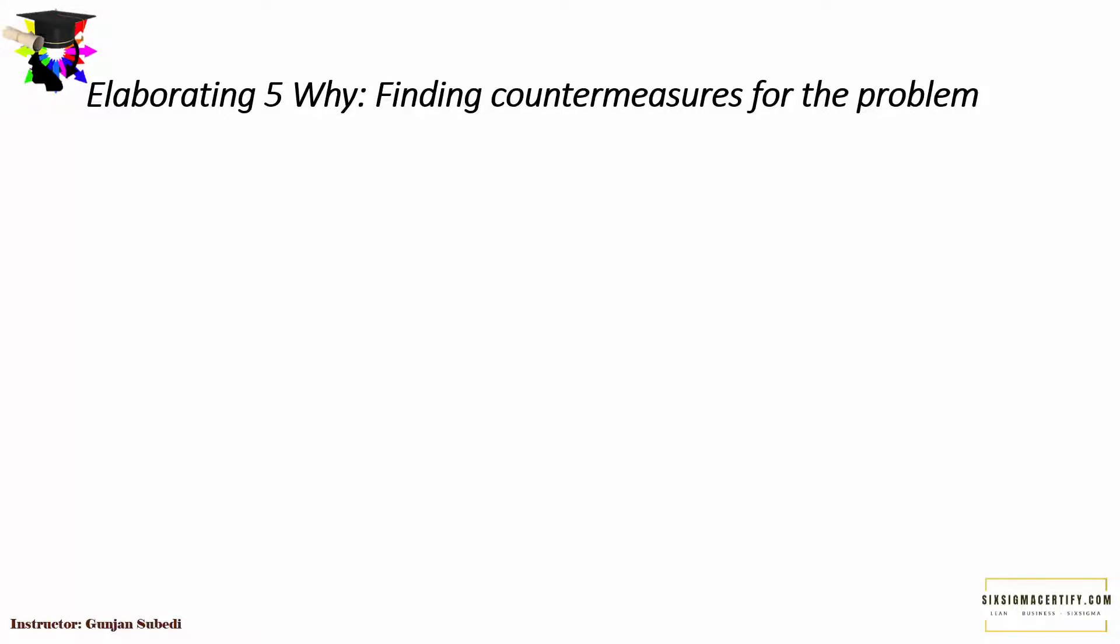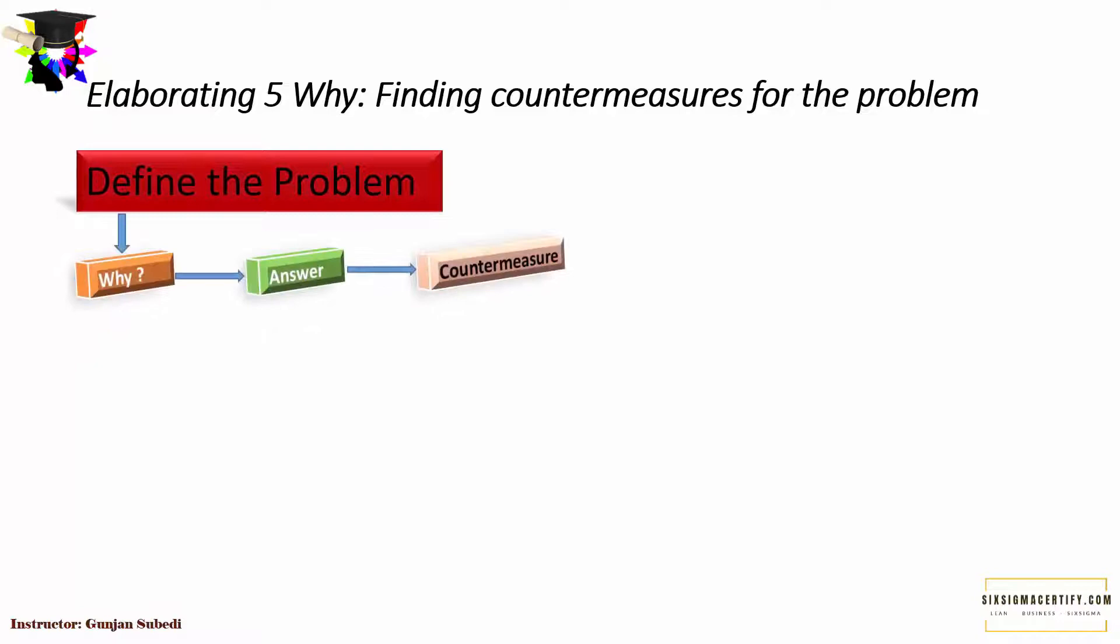The right approach of 5-Why analysis looks something like this. We define the problem. We ask why the problem occurred in the first place. There is an answer for it and we have a countermeasure for that reason. Next we again ask why for the reason. And we apply the countermeasure for that.